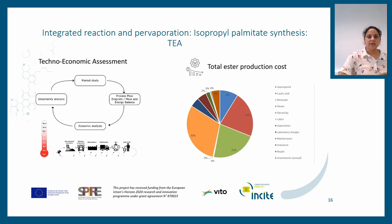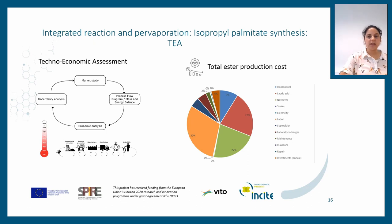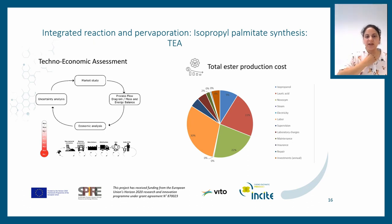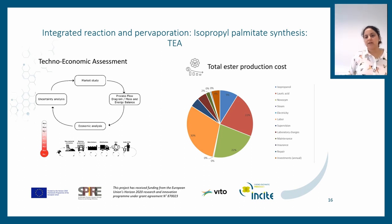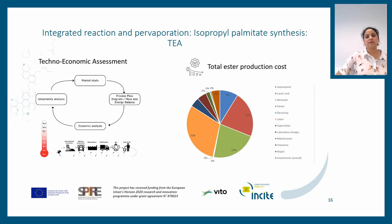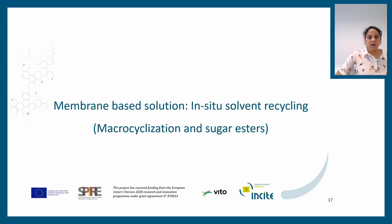Looking at the techno-economic assessment, which is very important to predict how close this process is to industrial expectations: using our data, we found that about 20% of the cost is the biocatalyst, and the rest is labor, electricity, feedstocks, and other requirements including repair and maintenance of the plant. That concluded the section on in-situ co-product removal for emollient ester synthesis.